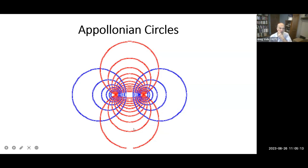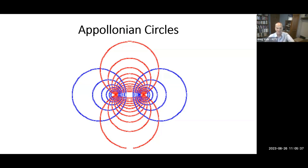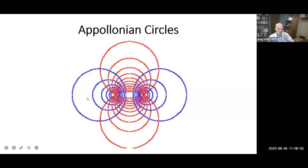First of all, something you should know about tori is that they have the same math as something called Apollonian circles, which were discovered by a Greek named Apollonius. You can see two sets of circles: the blue circles, if you imagine sweeping around a plane and coming back the other side, form tori. Whereas the red circles, if you sweep around, become spheres. The red circles always pass through two key points — the bipolar points. The blue circles always have those points inside them.